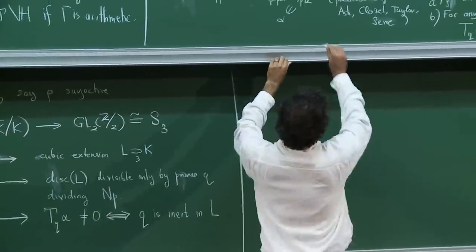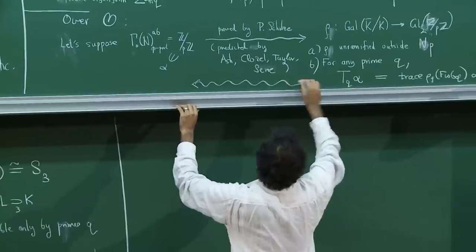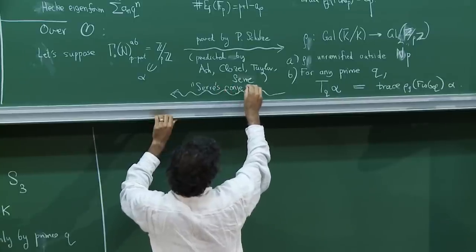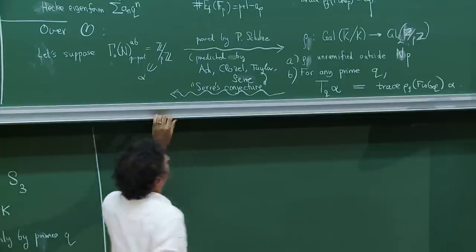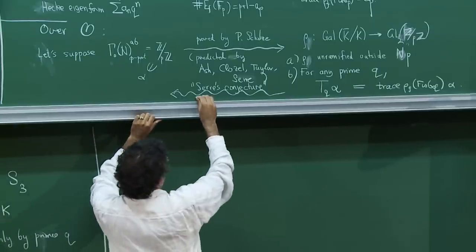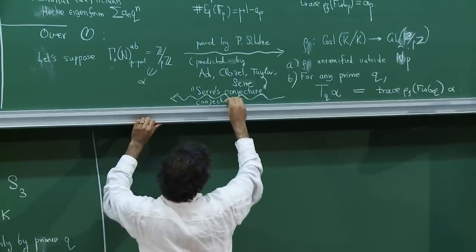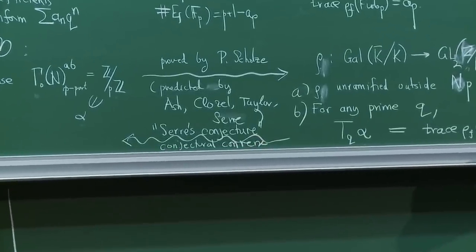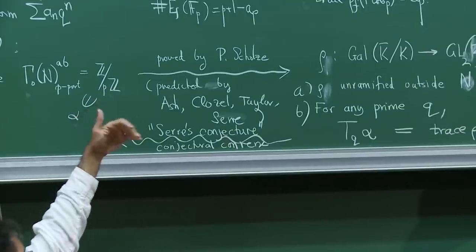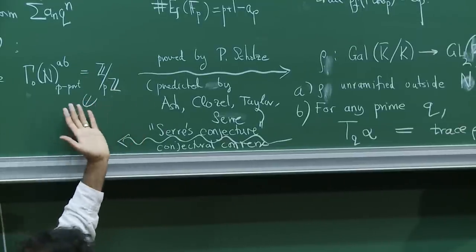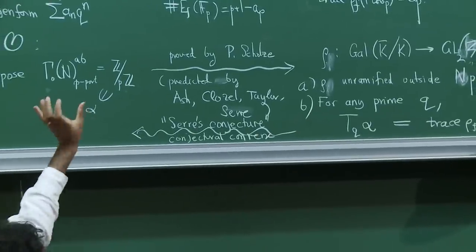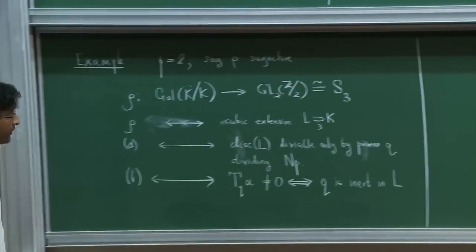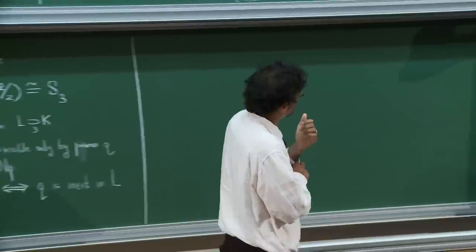This story fits into the Langlands program. Now Scholze has proved this analog of the Eichler-Shimura story, but the amount we know about this is still vastly less than the characteristic zero case. Very few tools from characteristic zero modular forms can be applied here. There's also a conjectural converse — Serre's conjecture — which is not known in this setting.